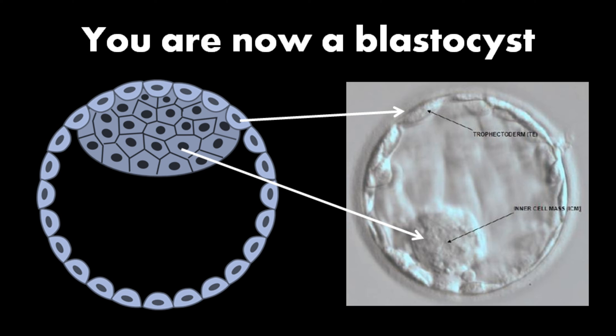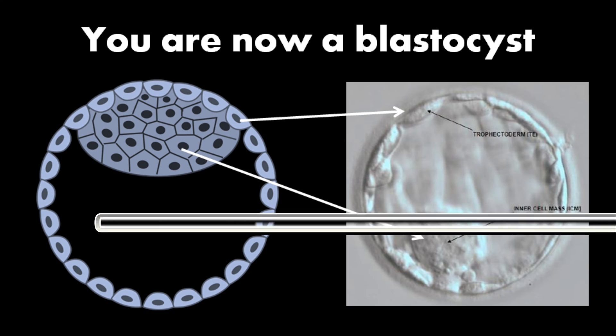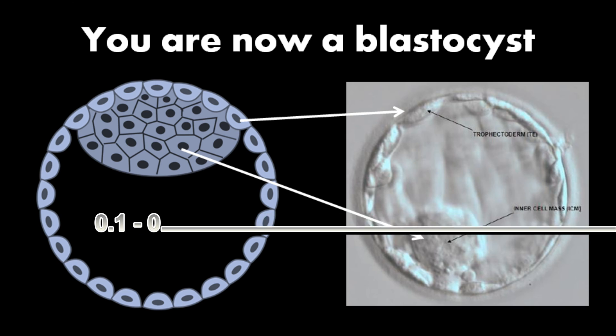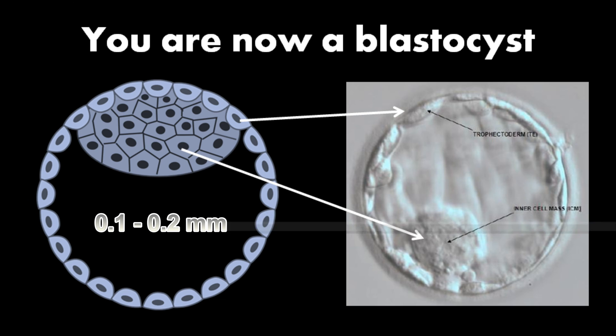You are now just a ball of cells, but you don't have any organs. The blastocyst has a diameter of about 0.1 to 0.2 mm and has only 200 to 300 cells.